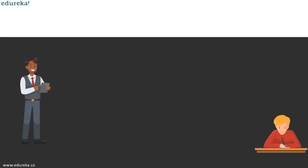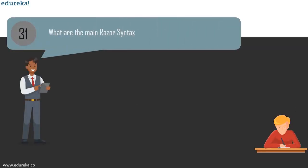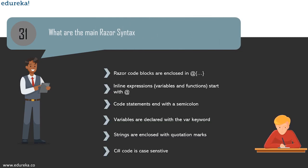Now let's look at some advanced MVC interview questions. The first question is: what are the main Razor syntax rules? Razor code blocks are enclosed in the @ symbol followed by curly braces. Inline expressions — variables and functions — should also start with the @ symbol. Code statements should end with a semicolon. Variables are declared with the var keyword. Strings are enclosed with quotation marks. C# code is case-sensitive, and C# file extensions should be .cshtml.